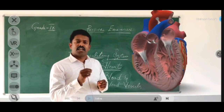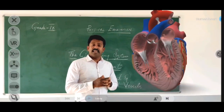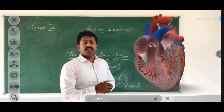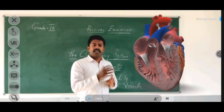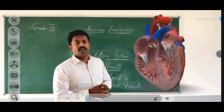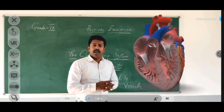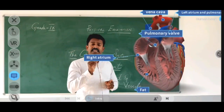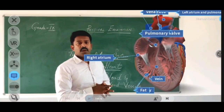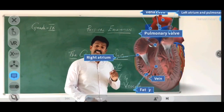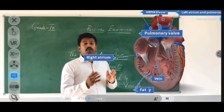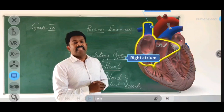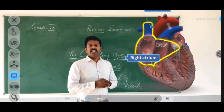Before discussing the circulation of blood in the heart, we will see the parts of the human heart. The human heart has four chambers: the right auricle, the right ventricle, the left auricle, and the left ventricle. The auricles and the ventricles are divided by two walls — the tricuspid wall and the bicuspid wall. We also have two large vessels: the superior vena cava and the inferior vena cava.